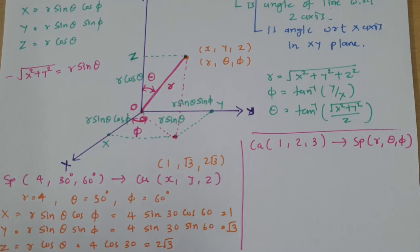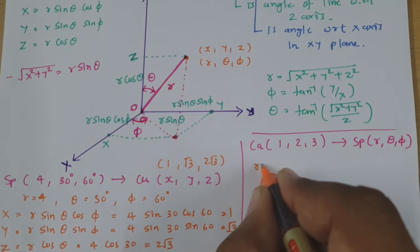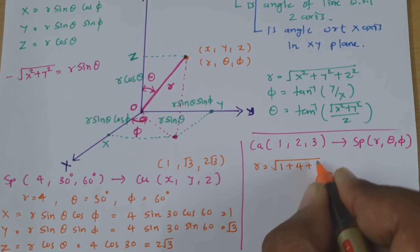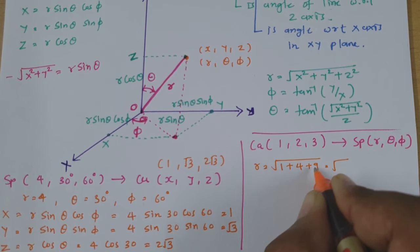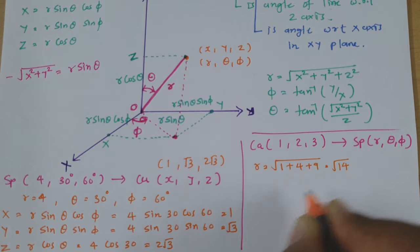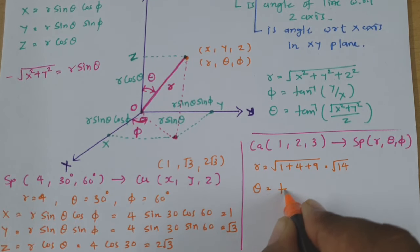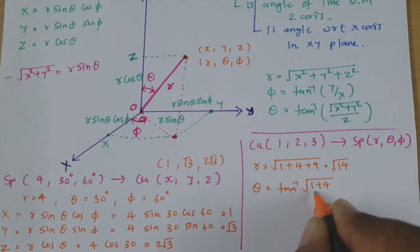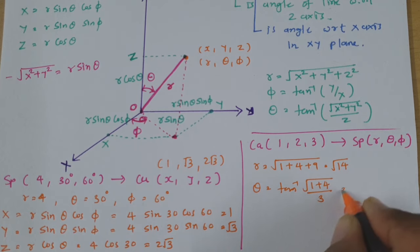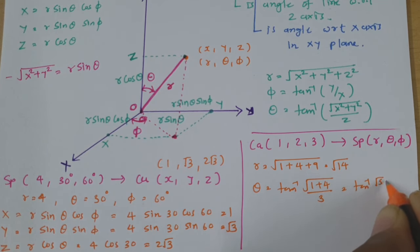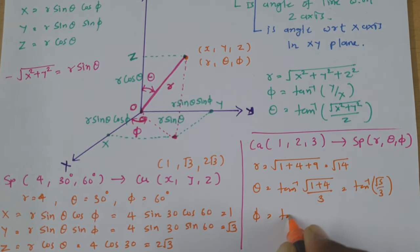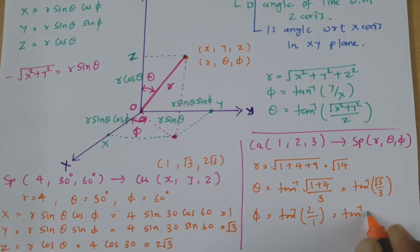Now to convert Cartesian coordinates to Spherical coordinates, given a point, first we calculate R as the square root of X squared plus Y squared plus Z squared. So that is square root of 1 plus 4 plus 9, which is square root of 14. Then Theta is tan inverse of square root of X squared plus Y squared divided by Z, so square root of 1 plus 4 divided by 3, giving tan inverse of root 5 over 3.